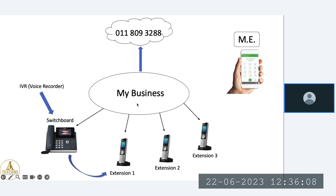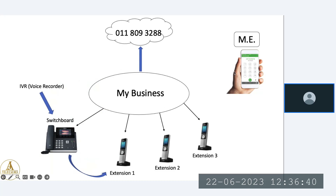Then obviously you'd have extensions. This illustration shows a business with three extensions, meaning three offices — the reception and three offices. Let's say this is the director's office, extension number one. Someone calls in and says they want to speak to John; the receptionist can simply transfer the call to John's extension. If John is not in the office, the receptionist can still transfer the call — it will ring on his desk phone and at the same time on his mobile extension, so even if John is driving on the highway, he can still receive calls on his cell phone directed from the office.